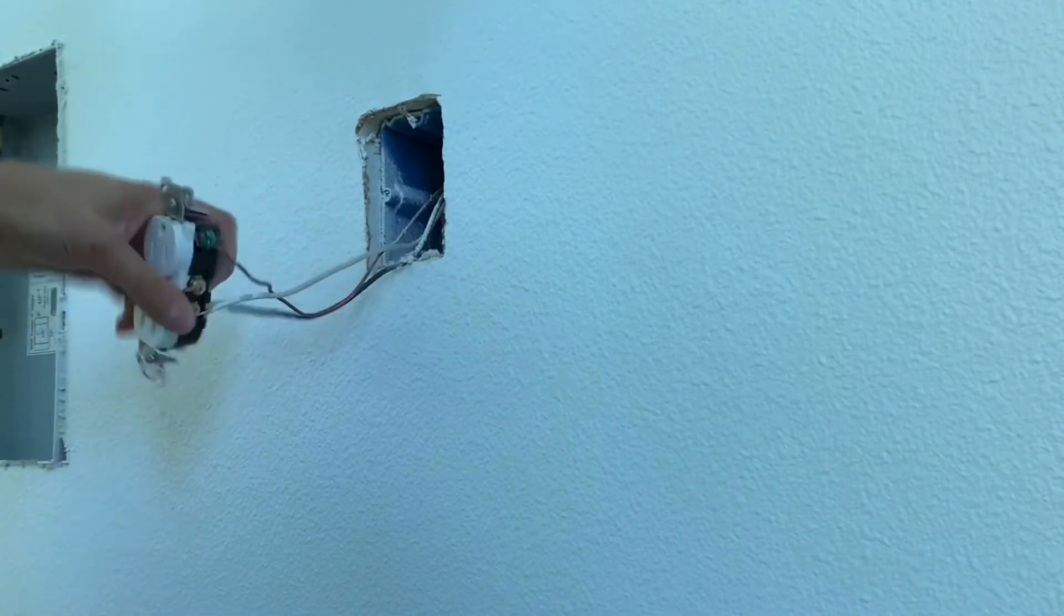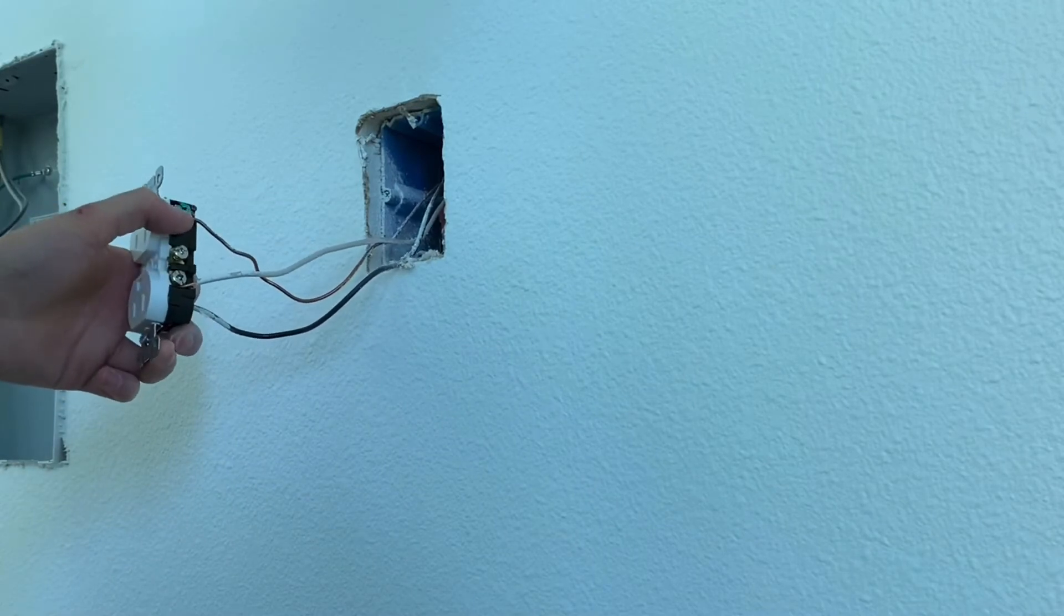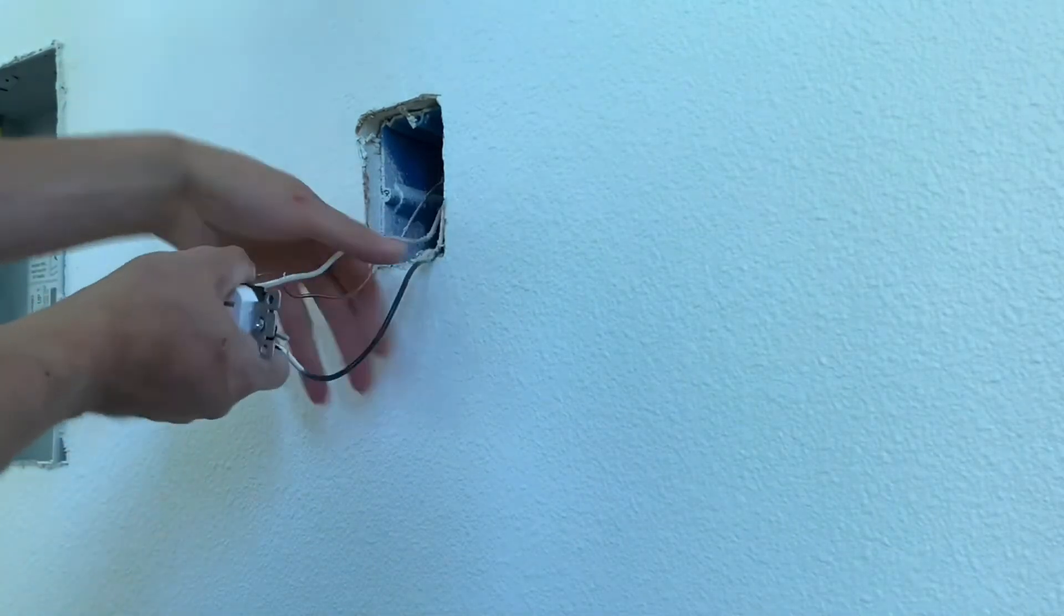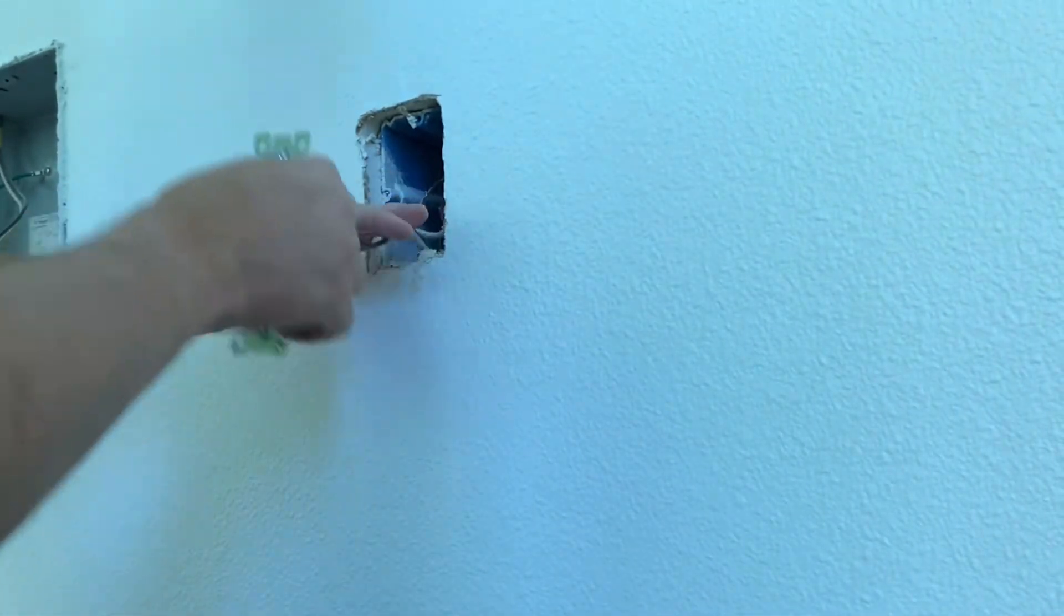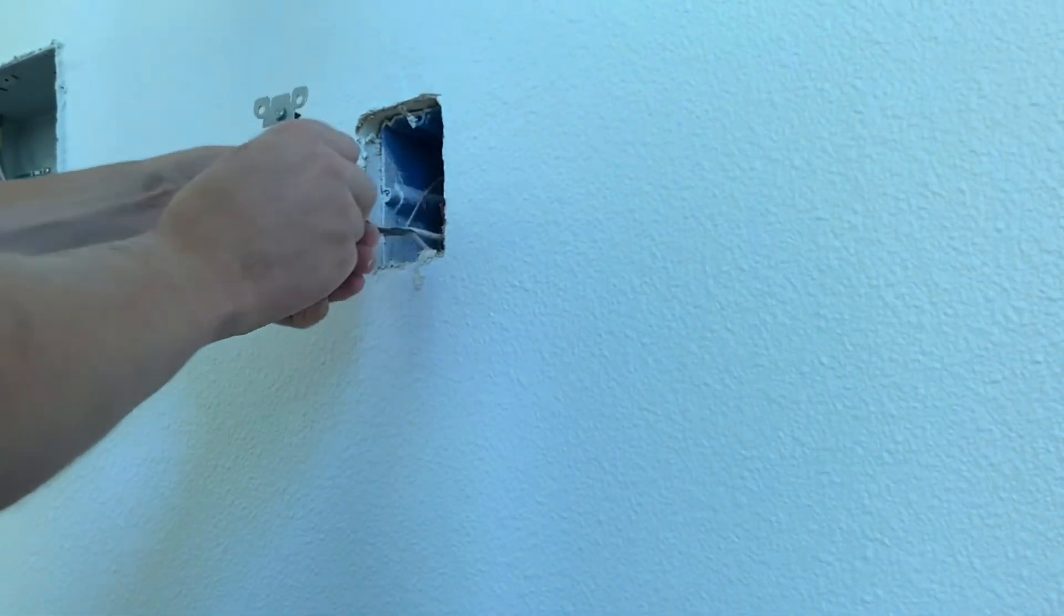That should do it. So you got your black on your gold screw, white on your silver screw, ground on your green screw. Then you're going to kind of just want to fold this in like an accordion. So kind of just have the wire straight and then bend it up.